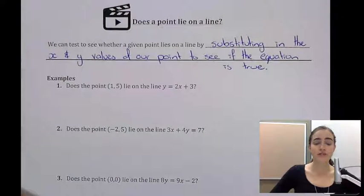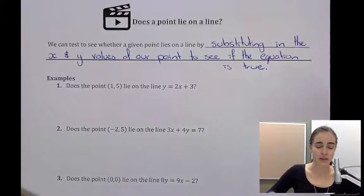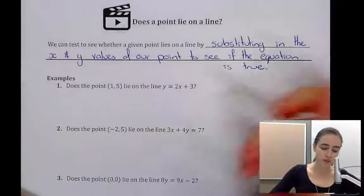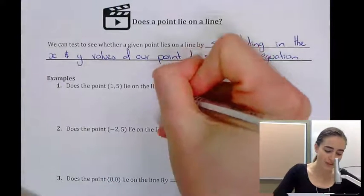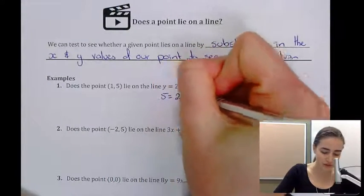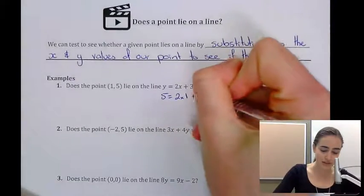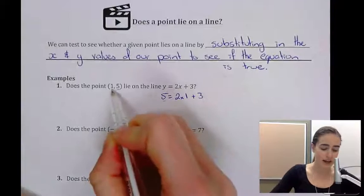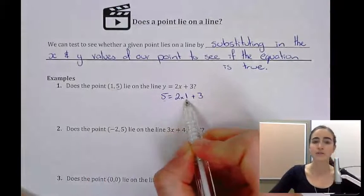For example, our first question asks: does the point (1,5) lie on the line y equals 2x plus 3? If we substitute these numbers in, this is our x value and our y value, so we'll end up with 5 equals 2 times 1 plus 3. We've put our y coordinate in here where the y was and our x coordinate in here where the x was.